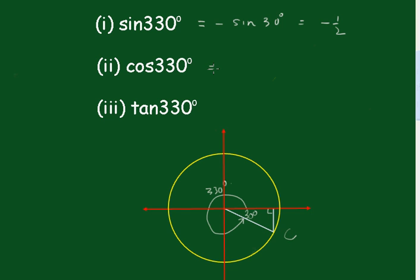This one here is the cosine of 30 degrees, positive, and that equals root 3 on 2.